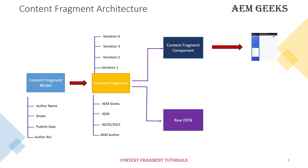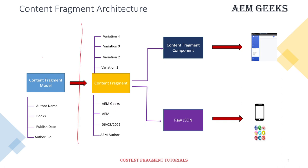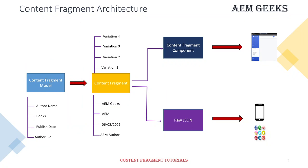You can also export content fragment content in raw JSON format to any third party. You can export this content to any mobile app, social networking app, or any third-party application that consumes content in JSON format. This is the basic understanding of the architecture — we will see each section in detail in coming tutorials. There is a lot more to understand about content fragments, so if you have any questions please do comment. Thank you very much.